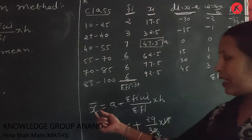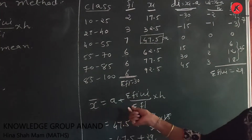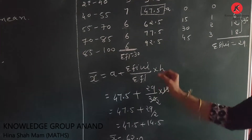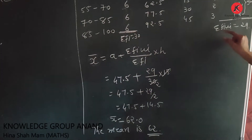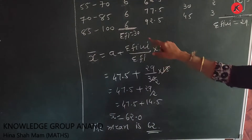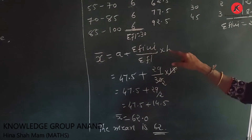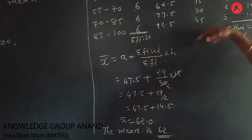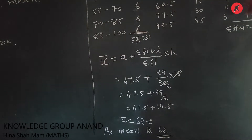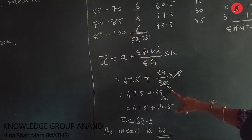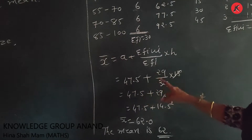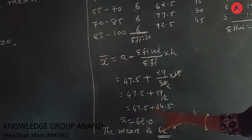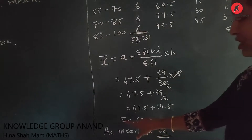Our formula is x̄ = a + (Σfi·ui / Σfi) × h. Substituting: a = 47.5, Σfi·ui = 29, Σfi = 30, h = 15. So x̄ = 47.5 + (29/30) × 15 = 47.5 + 14.5 = 62. Therefore x̄ = 62, the mean is 62.